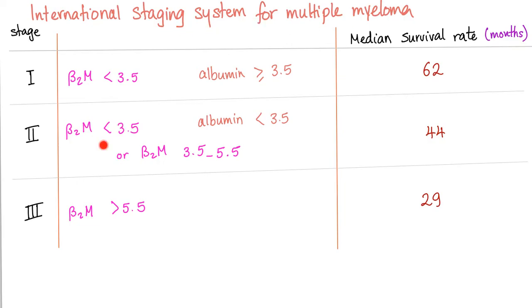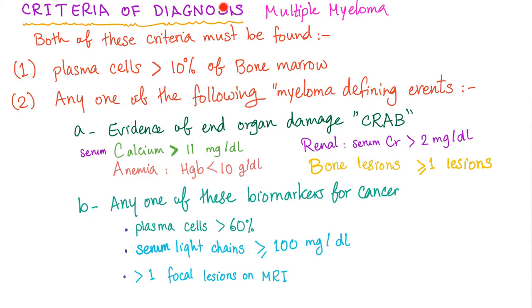On immunohistochemistry, these plasma cells are CD138 positive. The international staging system for multiple myeloma uses beta-2 microglobulin — the higher the level, the worse the prognosis — and albumin — the lower the albumin, the worse the prognosis. These two markers work in opposite directions.